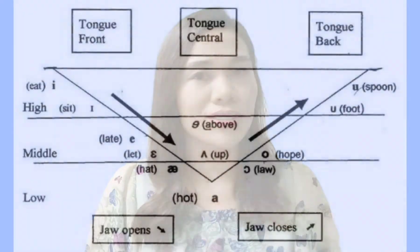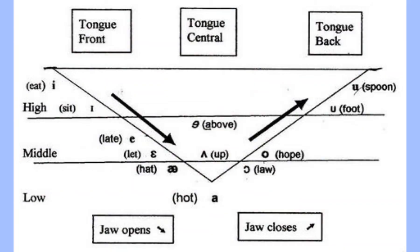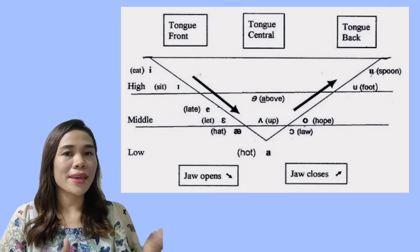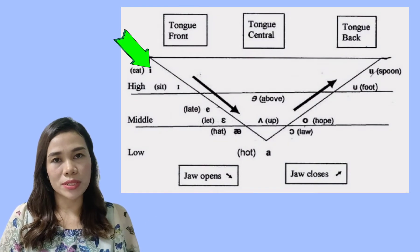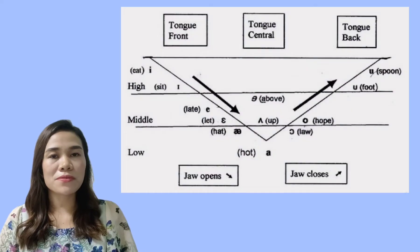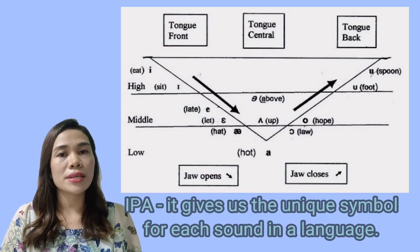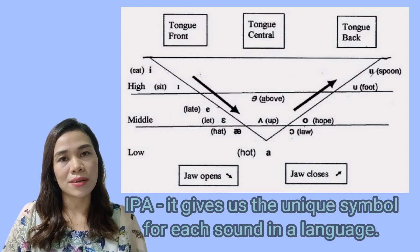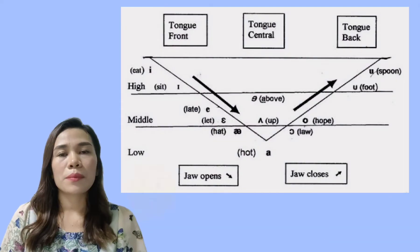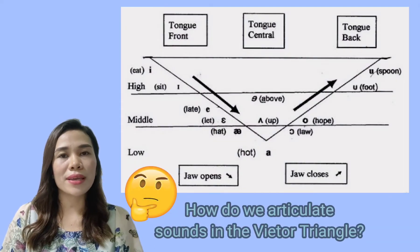That is why today I would like to introduce to you the Vitor Triangle. It is where we can discover — or recall — the rest of the other unique sounds of the phonemes, aside from the sounds we commonly know. This picture is what we call the Vitor Triangle. You will observe there are symbols here. We call it the IPA, or the International Phonetic Alphabet. The IPA provides us a unique symbol for each distinctive sound in a language — every sound has its own distinct symbol.